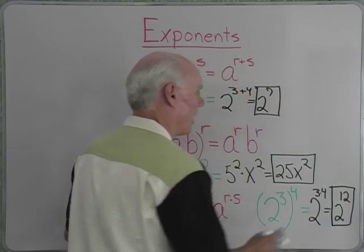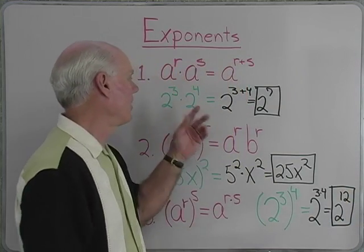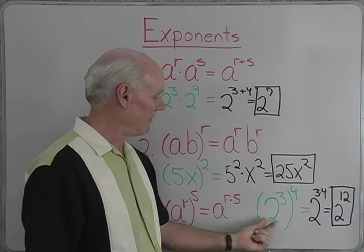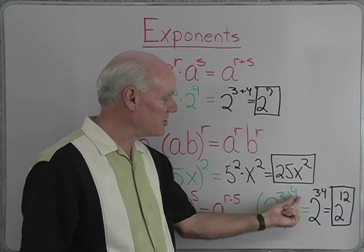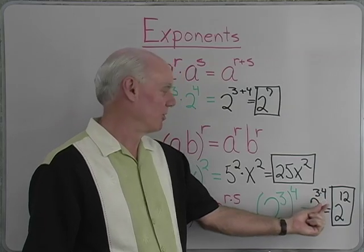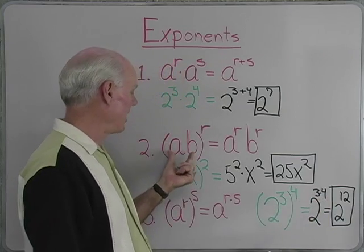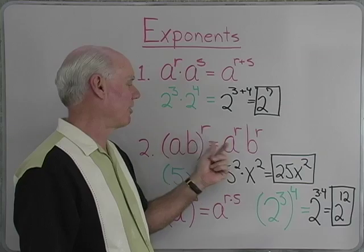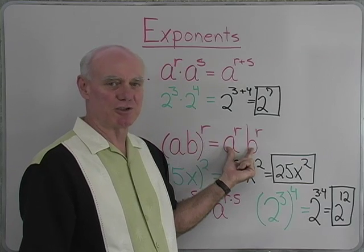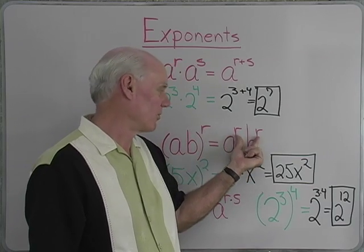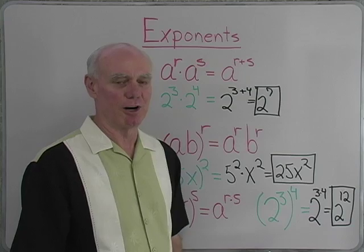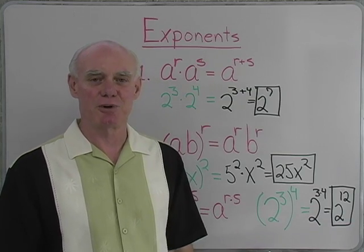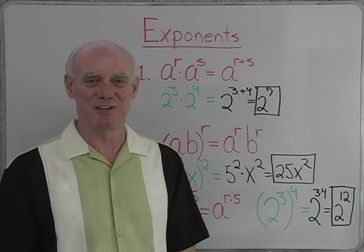So when I multiply with the same base, I add exponents. When I have a power raised to another power, I multiply exponents. And when I have a product raised to a power, it's each of the two factors in the product raised to that power. So a little quick review of some multiplication problems with exponents.